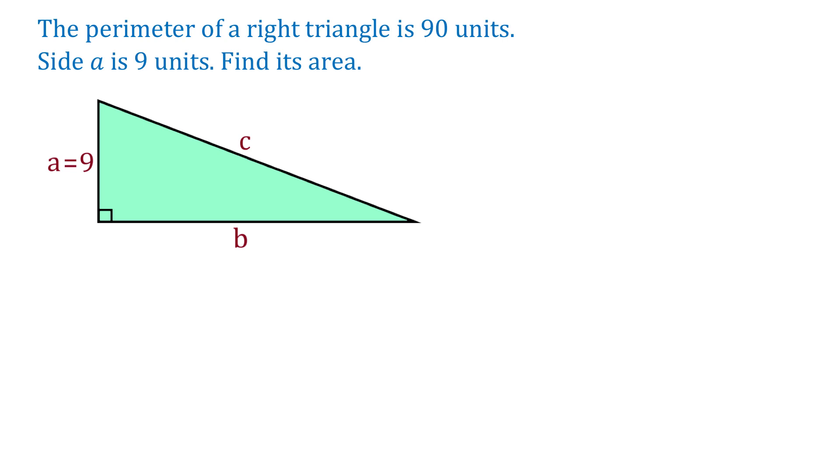To solve this problem in under 60 seconds, first we need to know that the perimeter is the sum of all three sides. If we subtract the left side from the perimeter, that is 90 minus 9, then the sum of the sides B and C is 81 units.